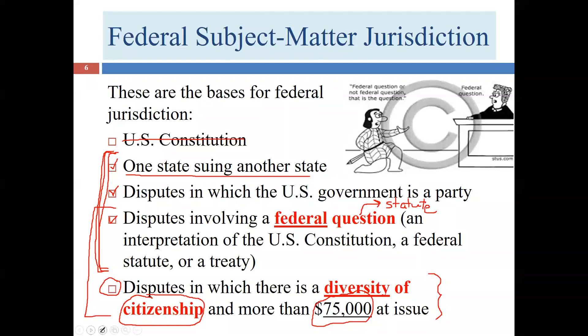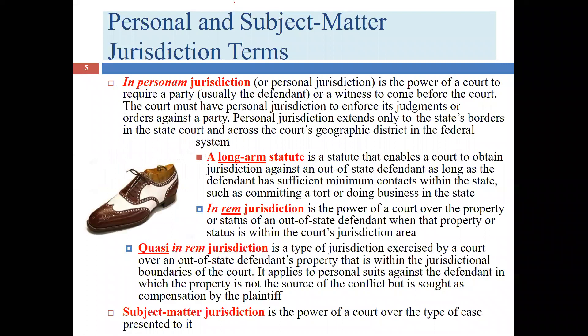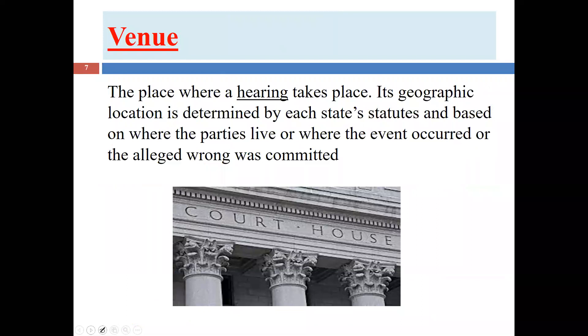Venue is the analysis attorneys perform after completing the jurisdictional analysis. After going through personal jurisdiction and subject matter jurisdiction, it may turn out there are multiple places the plaintiff could file — maybe both federal and state court, or several states. When there's more than one option, the plaintiff gets to choose. Once the plaintiff has picked the particular state and whether it will be state or federal court, the venue analysis helps narrow down which specific courthouse to use.